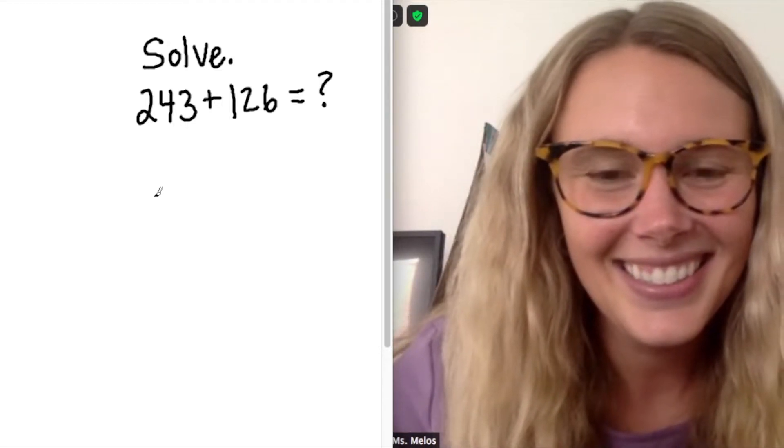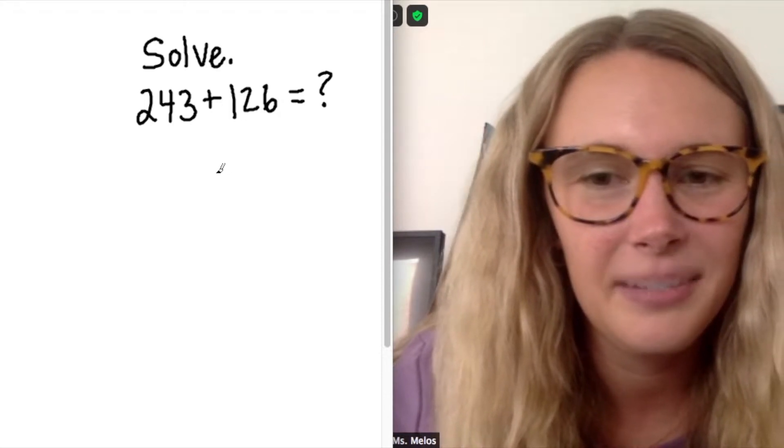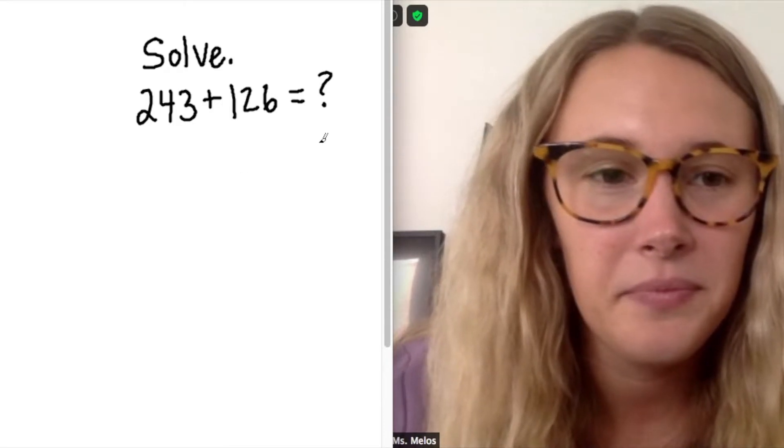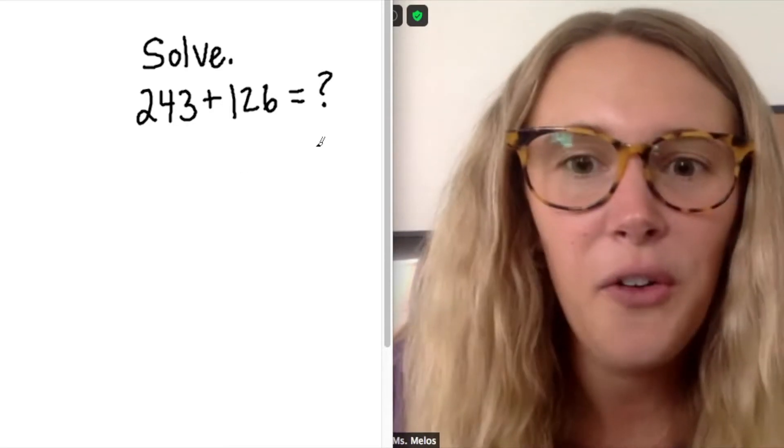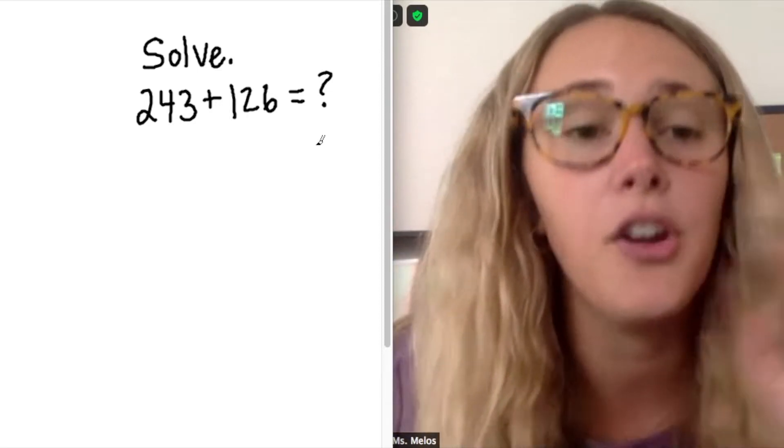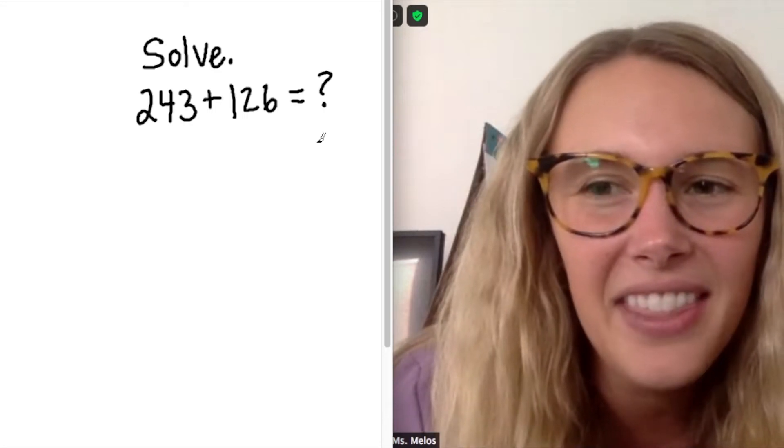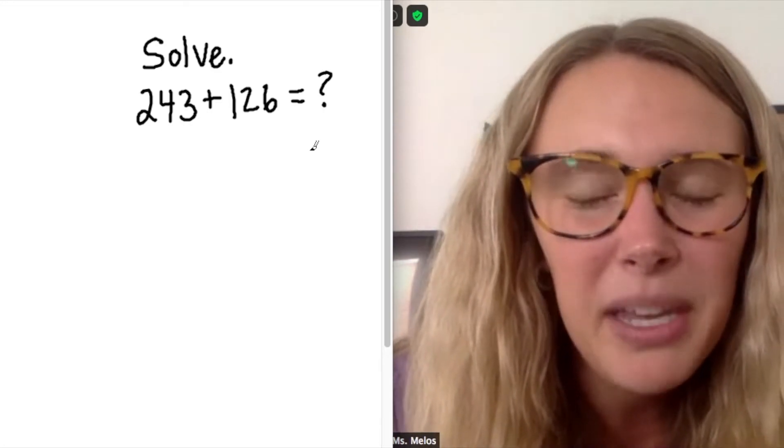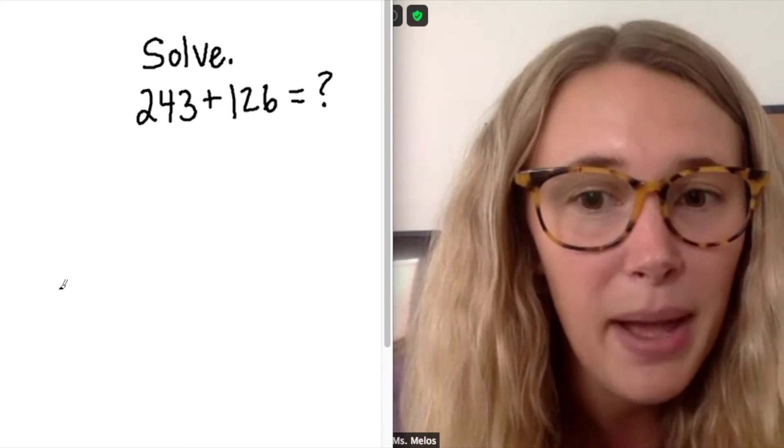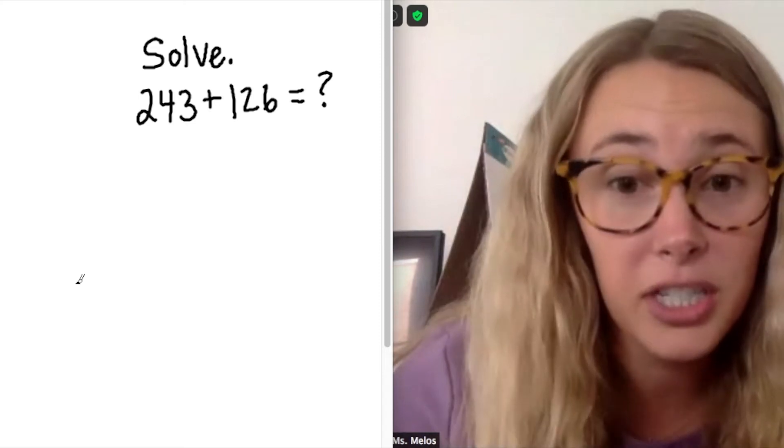So we have our first really big addition, 243 plus 126. So how do we add that? So first off, I know I could line up my numbers with my HTO chart. And I know we're going to learn how to do that later on. But I can actually add this number pretty easily because I know that my numbers are pretty small. So I know that I have my 100s, 10s, and 1s place.